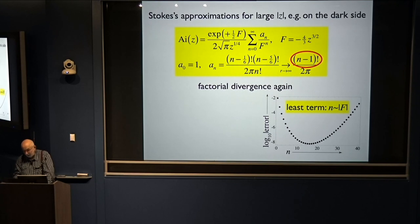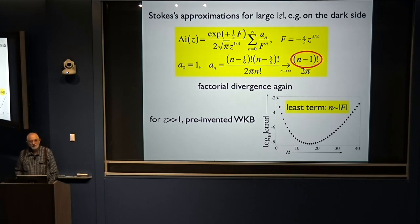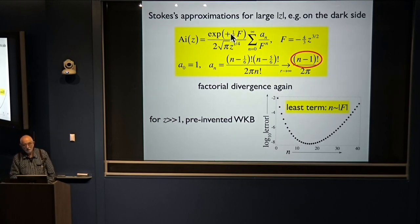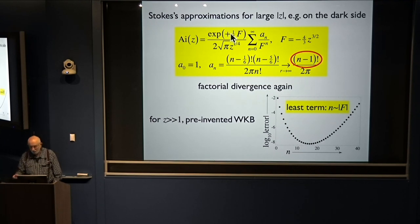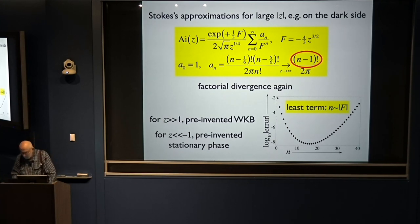The least term is where n, the order of the term, equals the exponent f. He realized that. He pre-invented WKB theory in order to get this approximation on the dark side — exponential decay — recognizing that Airy's function satisfies a differential equation. On the bright side with the cosine, he pre-invented the method of stationary phase. Without fanfare, these are sort of buried away in his calculations, but he was a very original person.